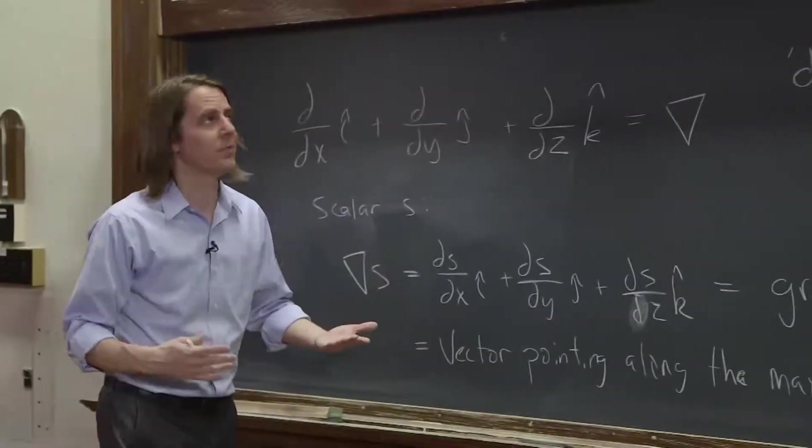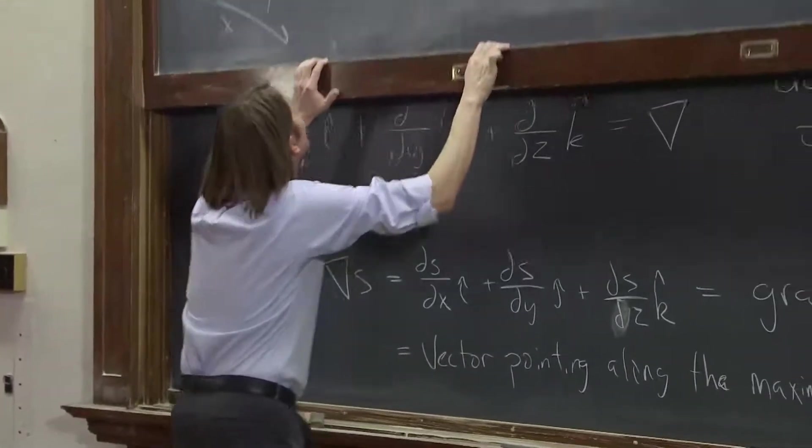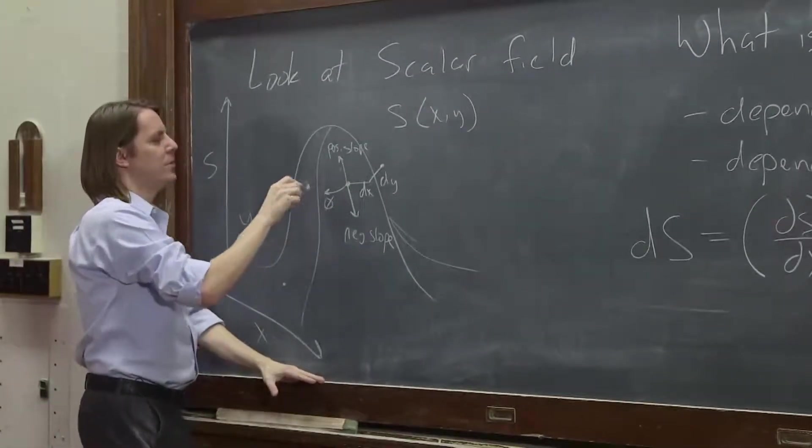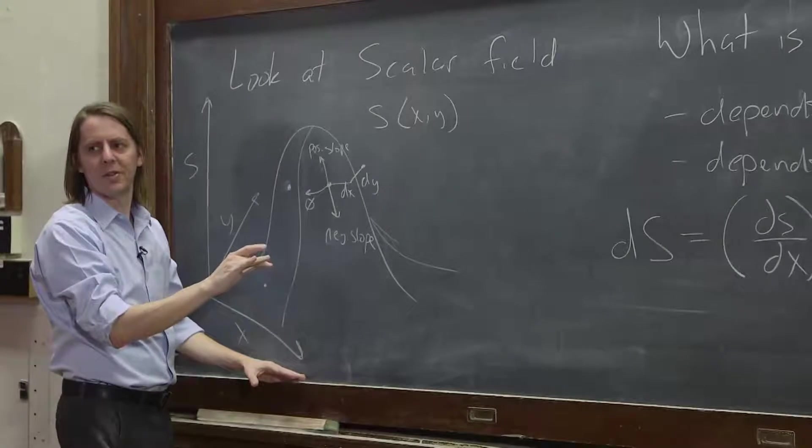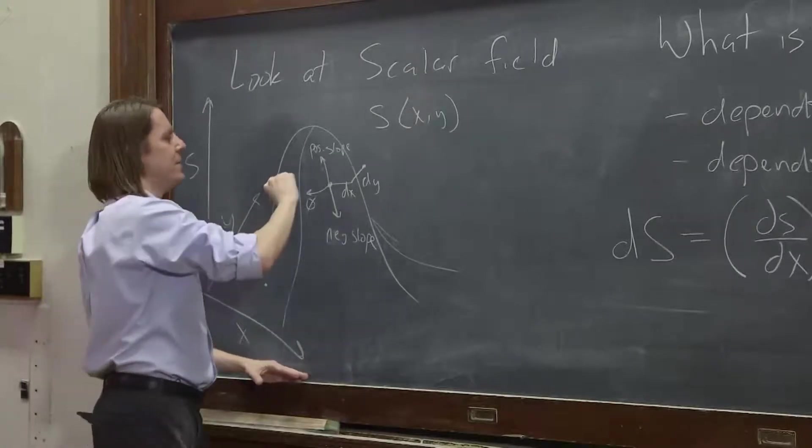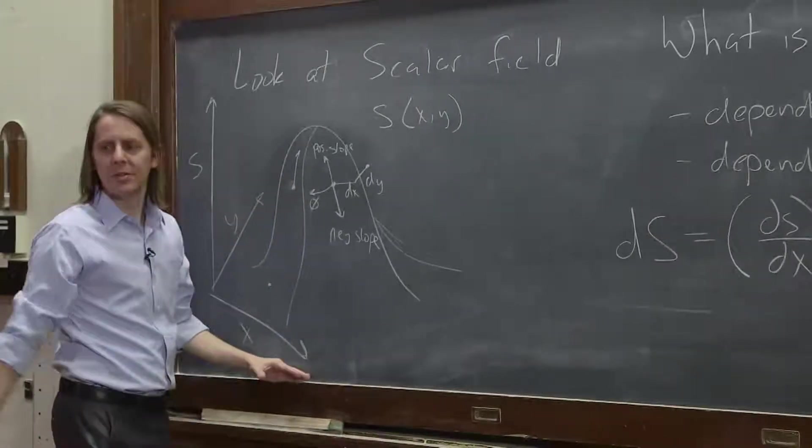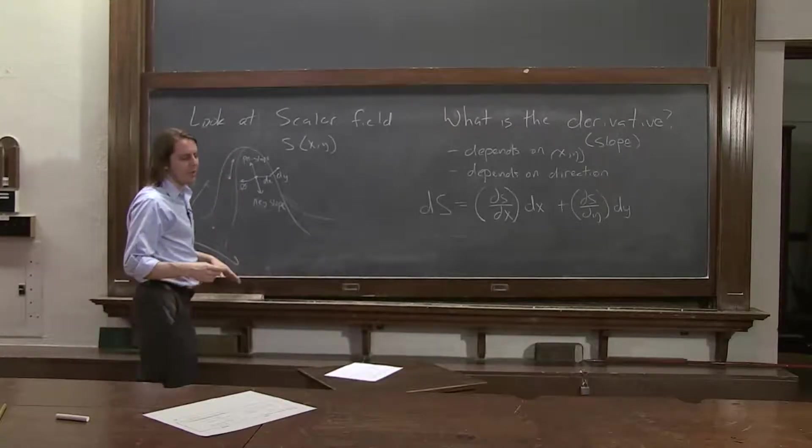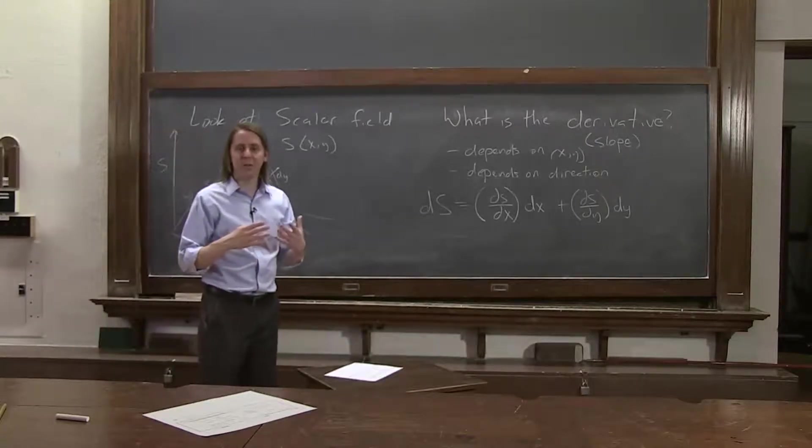And its magnitude of that vector is equal to the maximum change. So if we came back down to our drawing like this, it's true that in all these different directions, you can come up with different dS's as you move in different directions. But if you take the gradient, you just get the maximum change, straight up. It'll give you the direction and the magnitude. That's what the gradient does.